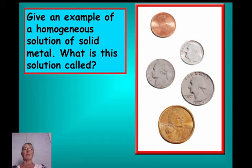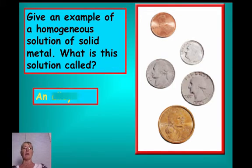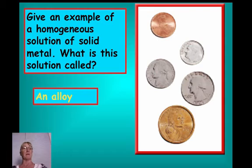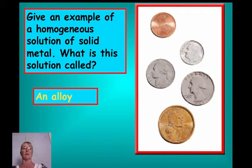As an example of a homogeneous solution of solid metals, consider American coins — they are all alloys. A dime is not pure silver, and a penny is not mostly copper; it's mostly zinc inside. You take two or three metals, melt them together at high temperatures, mix them until uniform, and allow them to cool into a solid — that's specifically called an alloy.